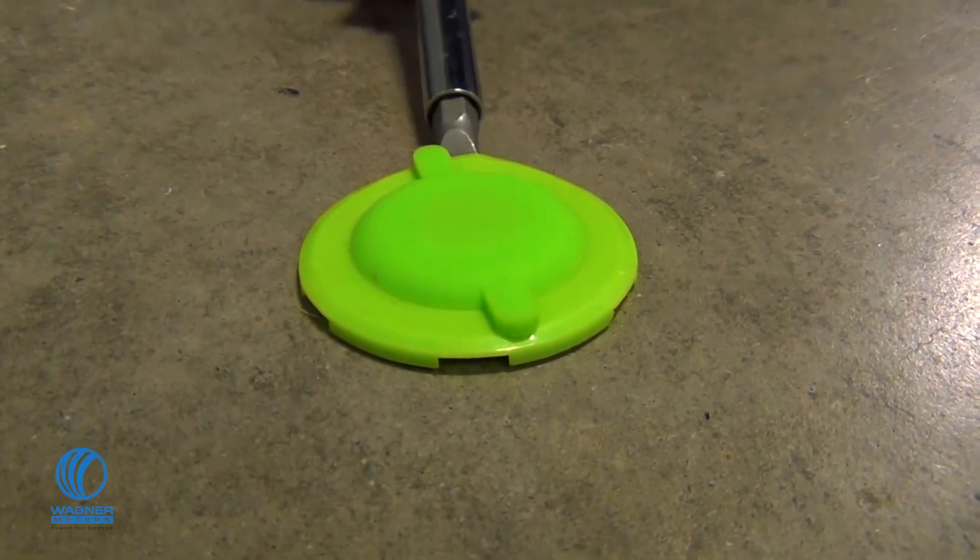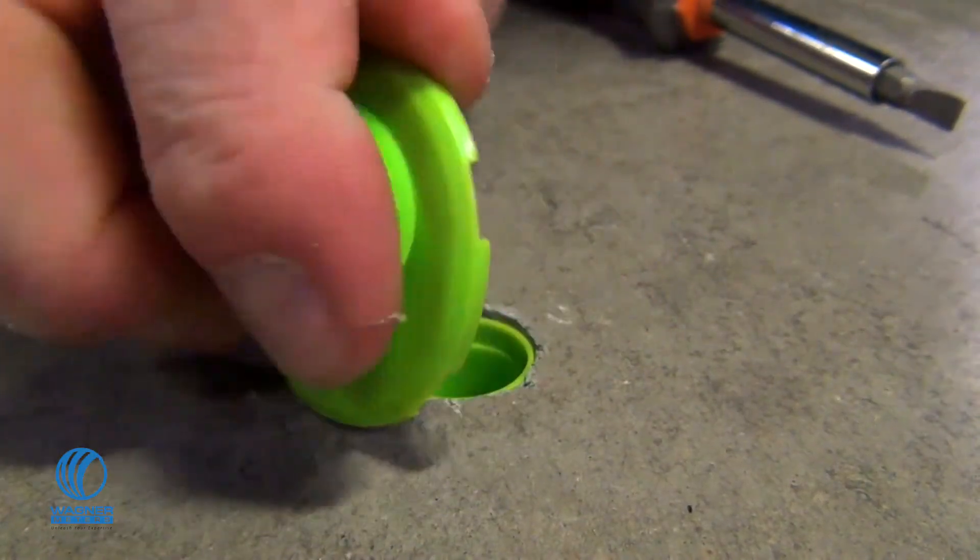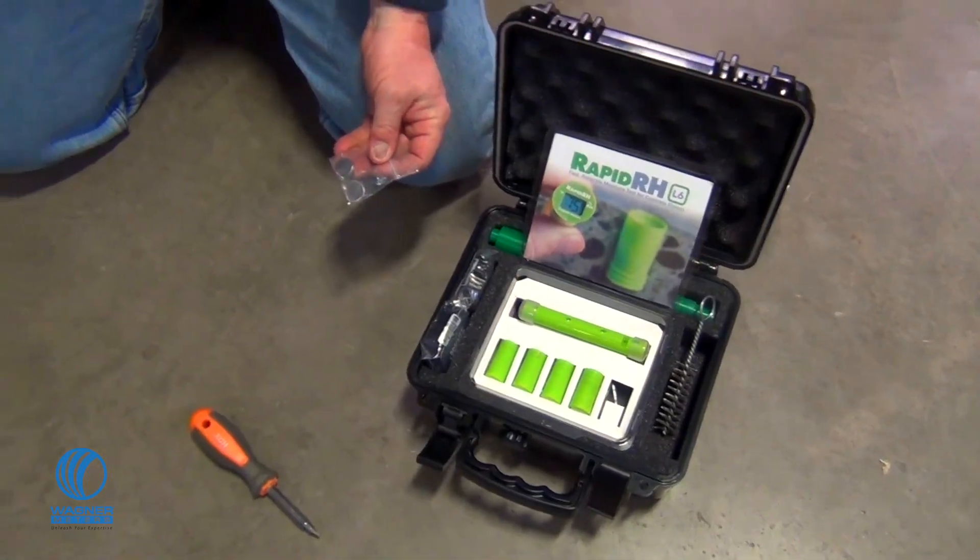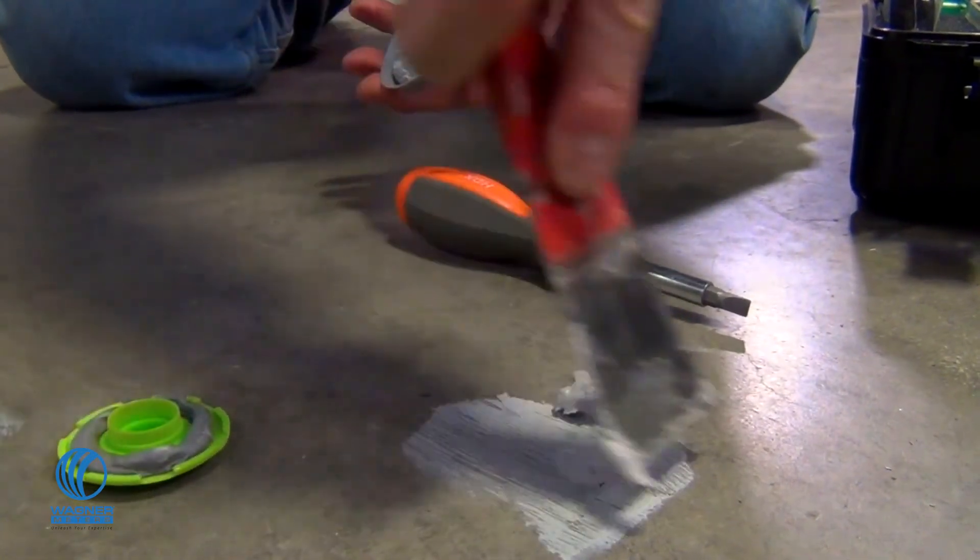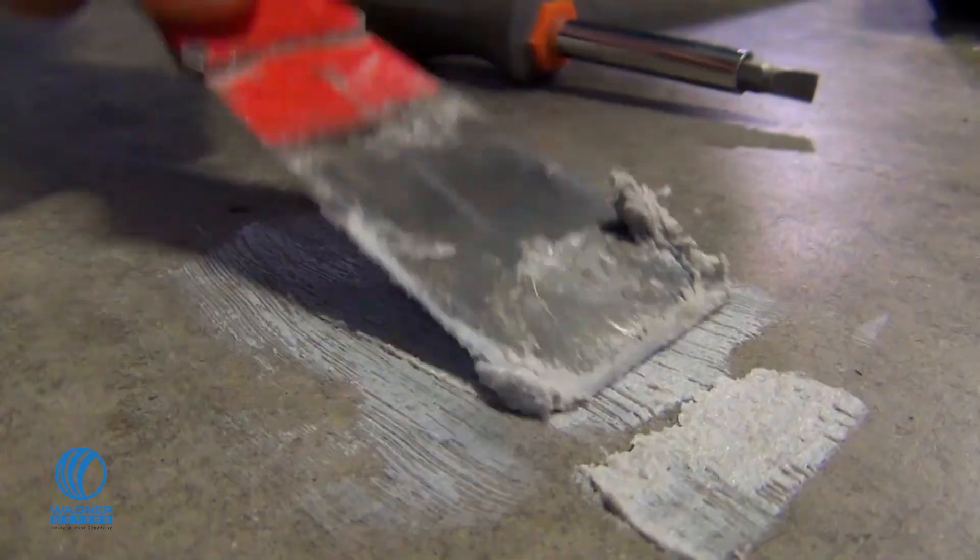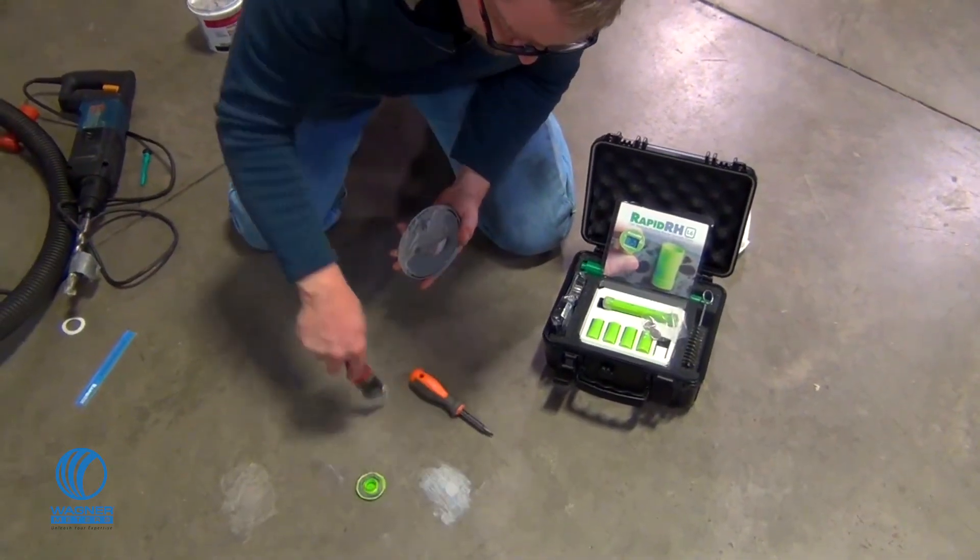When ready to apply the floor covering or coating, remove the cap, place the stainless steel metal disc over the smart sensor, and skim coat the hole using a cement patching compound that is compatible with the flooring manufacturer's installation instructions.